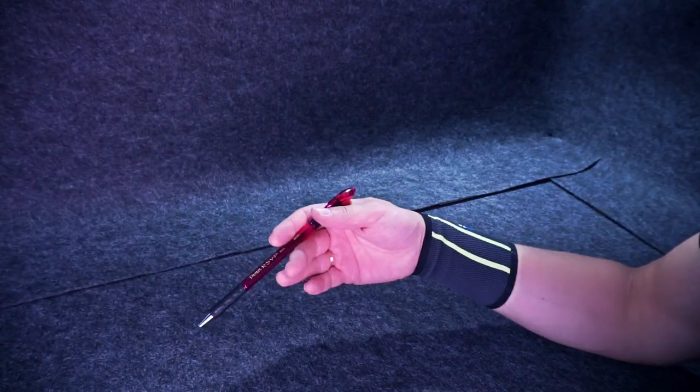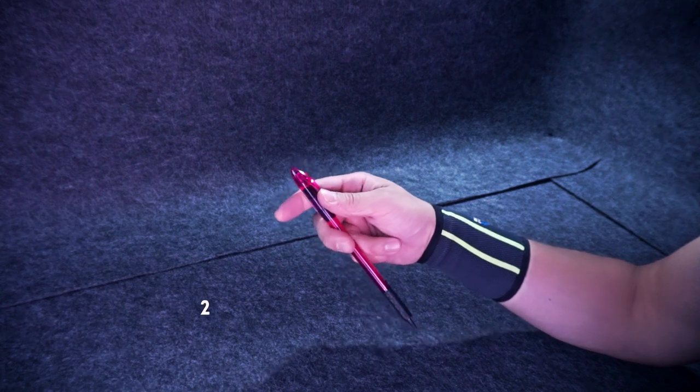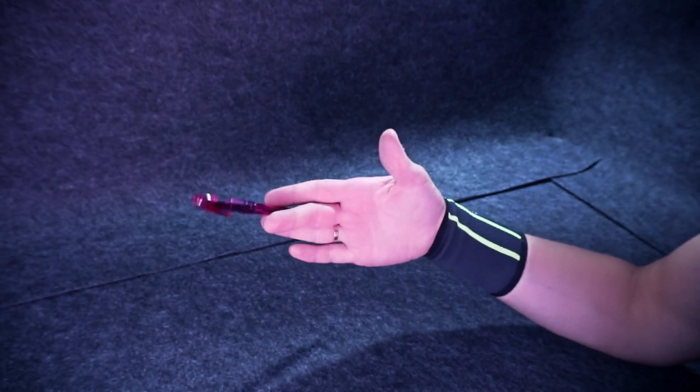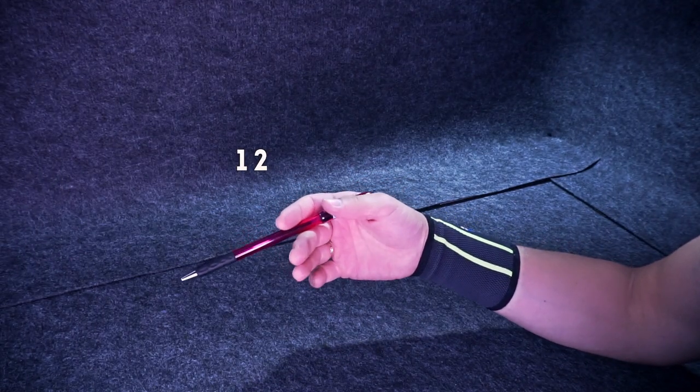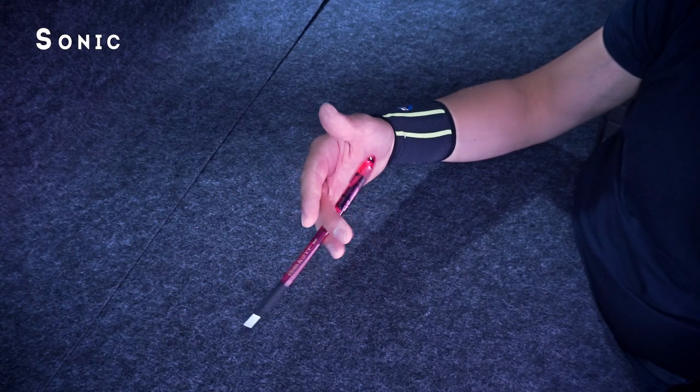And the last, but certainly not least, the trick which is the base of a huge amount of filler tricks in pen spinning: Sonic. A pen goes from a slot between ring and middle finger, 2-3, to a slot between middle and index fingers, 1-2, behind your middle finger.